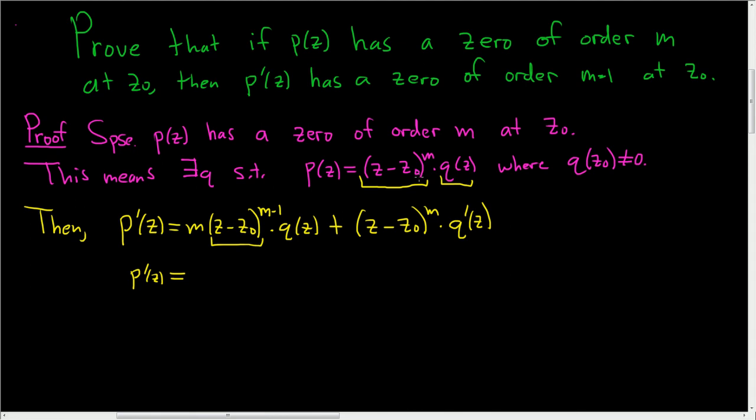We need to have it written as z minus z naught to the m minus 1 times a polynomial such that when you evaluate that polynomial at z naught you don't get 0. So let's pull this out. z minus z naught to the m minus 1.